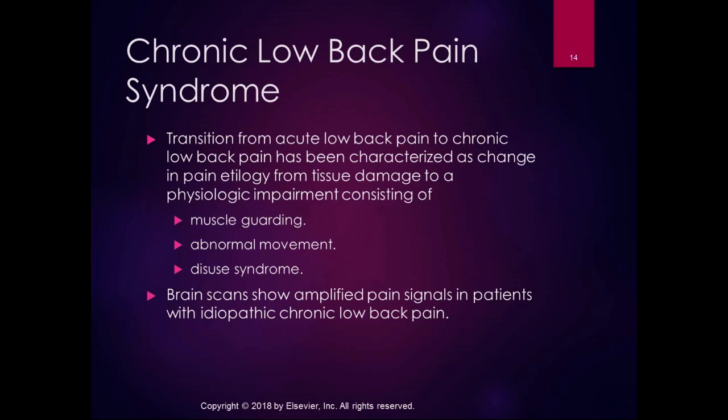The transition from acute low back pain to chronic low back pain has been characterized as a change in pain etiology from tissue damage to a physiologic impairment consisting of muscle guarding, abnormal movement, and disuse syndrome. Brain scans on patients with idiopathic chronic low back pain show amplified pain signals, which is why it's considered a neuropathic pain syndrome.